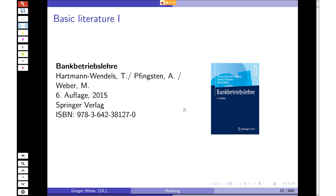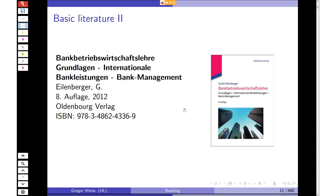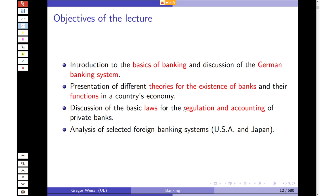The first textbook is Bankbetriebslehre by Hartmann-Wendels, Pfingsten and Weber — the standard textbook on banking in Germany. The second is Bankbetriebswirtschaftslehre by Guido Eilenberger, also in German. This second one is somewhere between an apprenticeship and a bachelor's degree level — it has a more practical approach and is softer on the theoretical side. But it's not bad — every now and then you can take a look at it to gain insight into the practical side of banking.